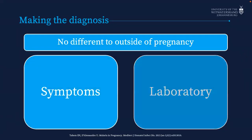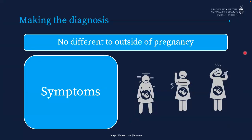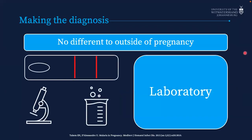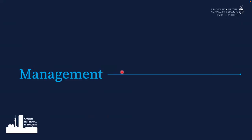Making the diagnosis is no different to outside pregnancy — look at symptoms and lab signs. Symptoms include malaise, body aches, and fever. In endemic areas fever is quite common; in our setting, if someone has fever and has traveled to a malaria area, think malaria. For lab diagnosis: thick and thin blood smears, PCR, and malaria rapid tests. Remember in our setting the malaria rapid test only tests for P. falciparum, so don't rely on it if a patient has traveled from Southeast Asia or parts of Africa where P. vivax or P. ovale may be prevalent.